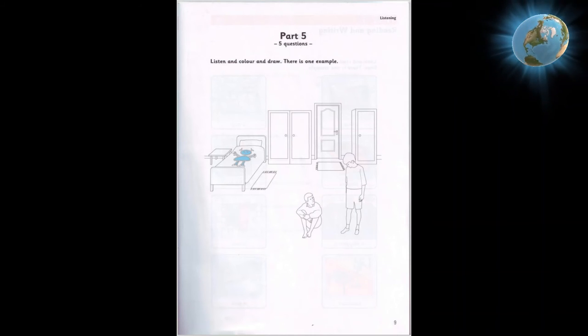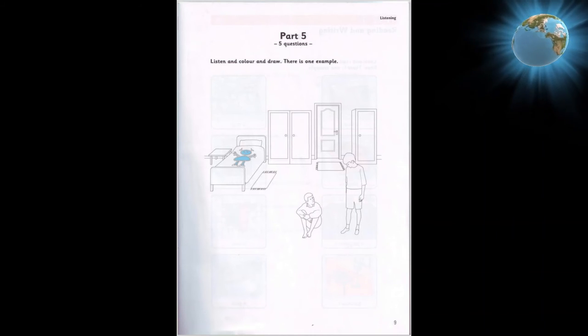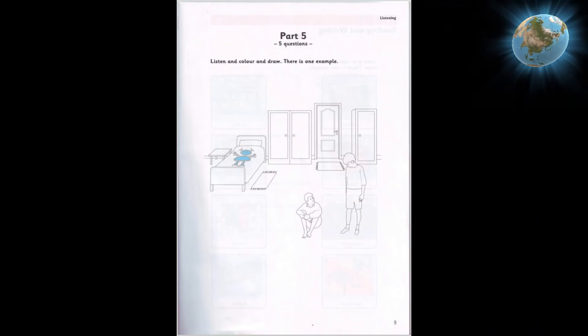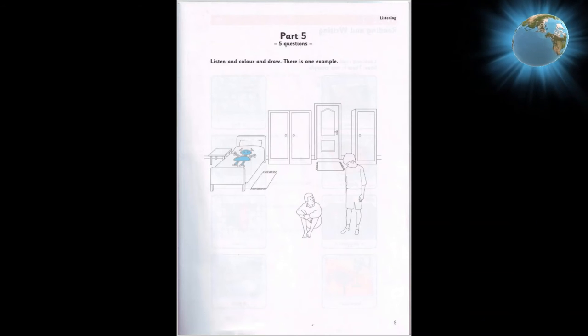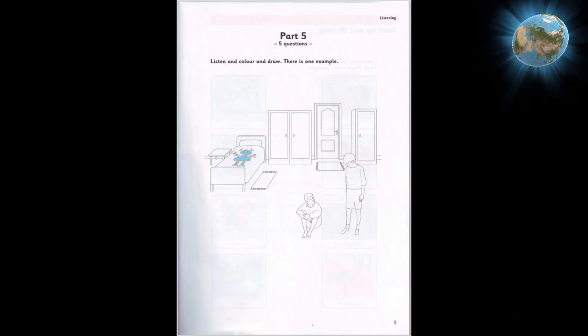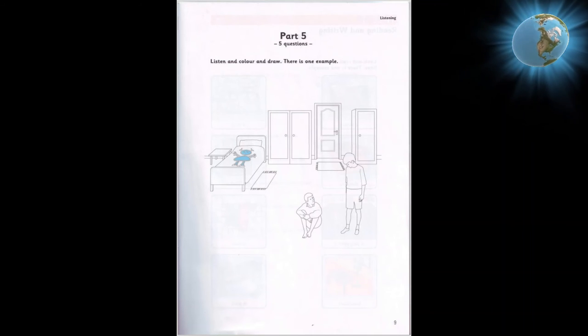And now you can draw again. What shall I draw? The boys need something to play with. Shall I draw a car or a plane? A plane. That's good. Where? Draw a plane between the boys and then colour it red.